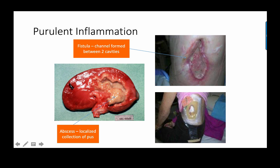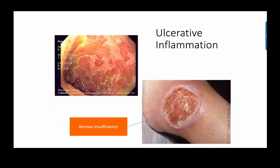A fistula is a channel that forms between two hollow cavities or organs, or between a hollow organ and a cavity. Loops of bowel may fuse together due to inflammation, creating an opening that allows pus and intestinal contents to pass. This example shows a fistula between the pleural cavity around the lung and the outside, in a patient who had a pneumonectomy. Pus inside a cavity is an empyema and requires significant incision and drainage. The cause of this particular empyema was aspergillus.